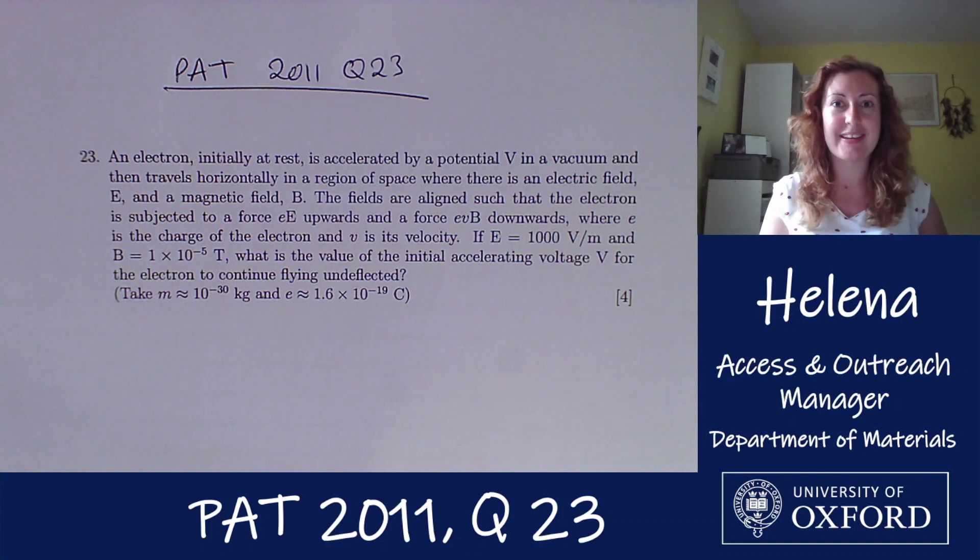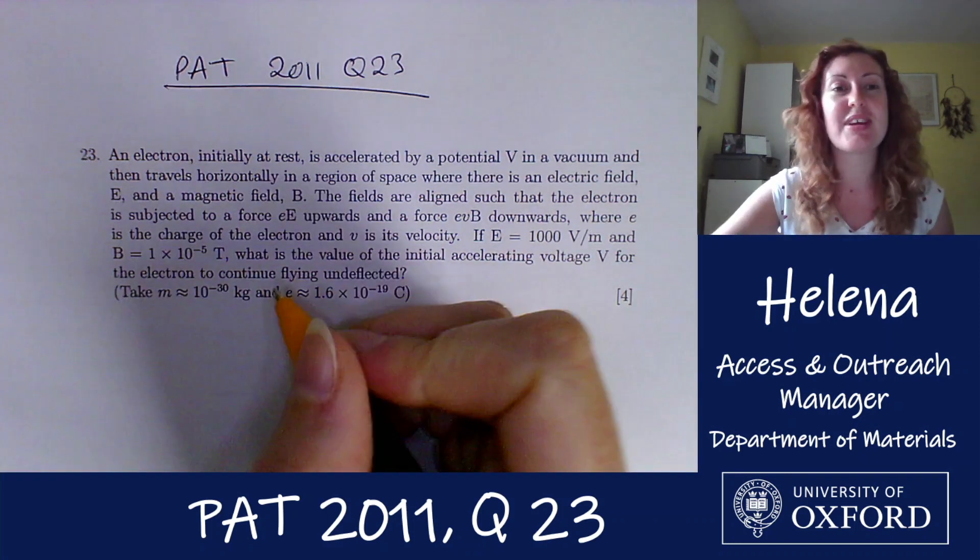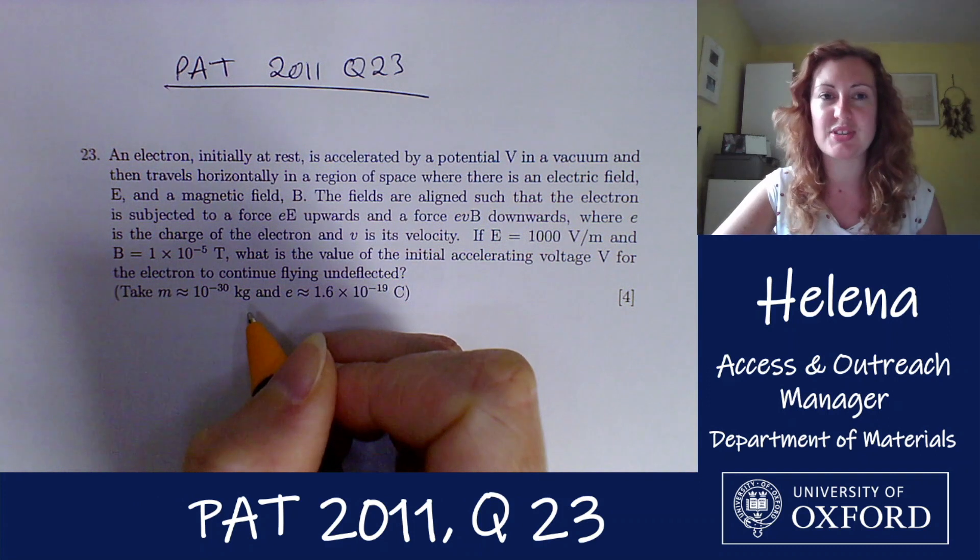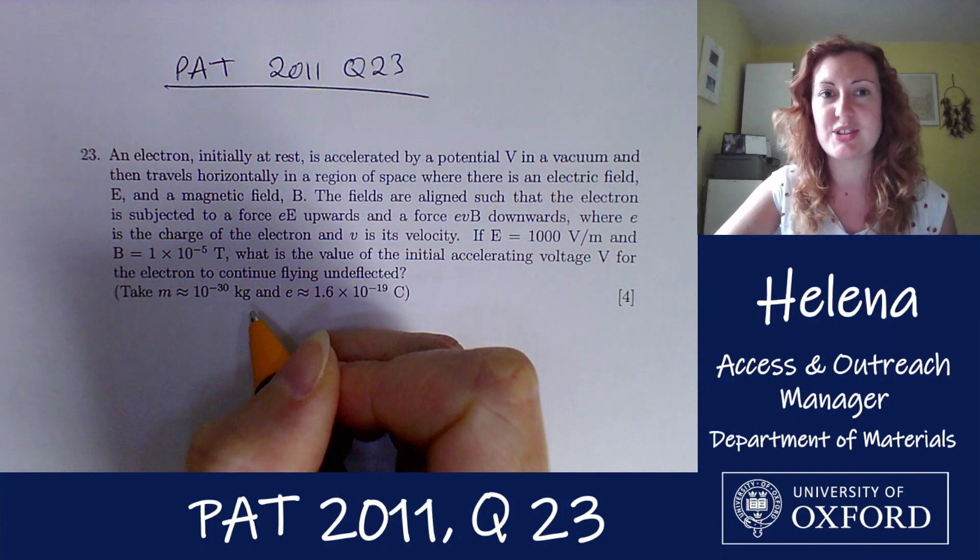So this question is all about an electron moving through an electric and a magnetic field. So let's take a look. As I read through this question I'm just going to be underlining bits that I think are important to note for when we're looking through the solution in a moment.